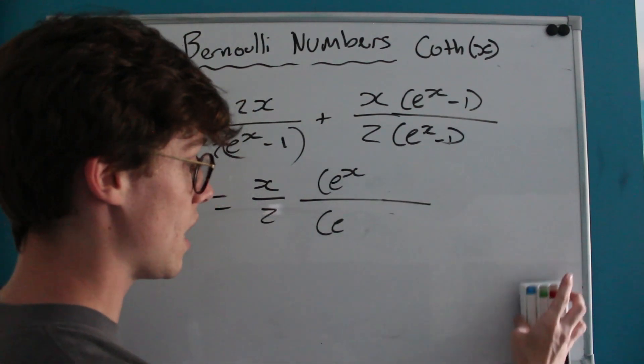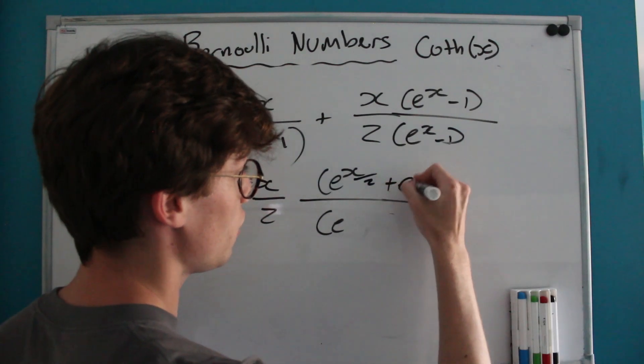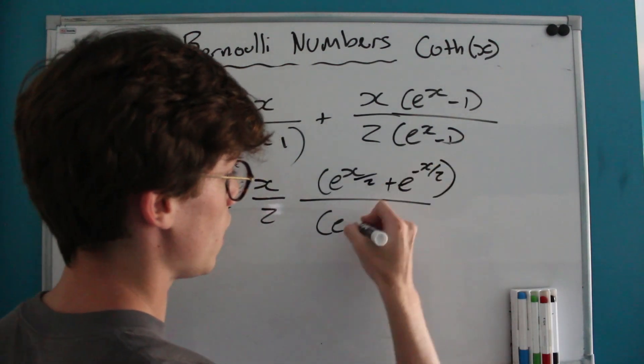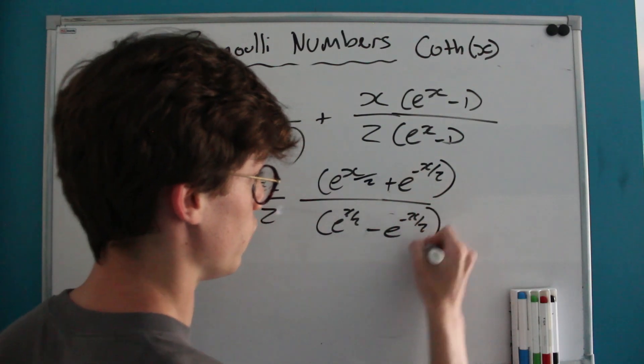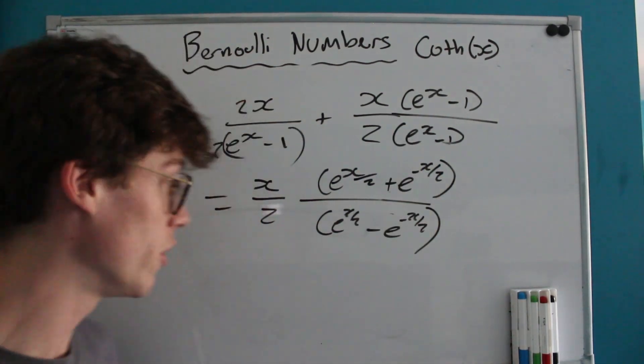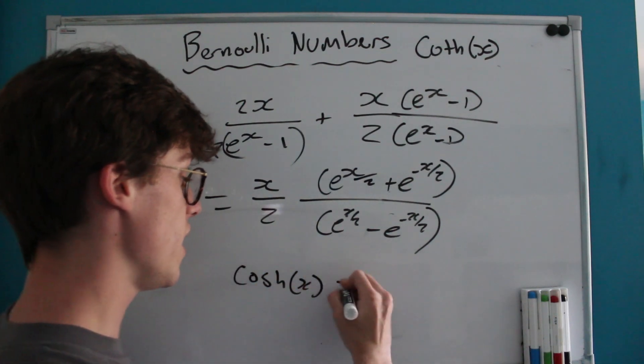This is going to leave us with e^(X/2) plus e^(-X/2) and e^(X/2) minus e^(-X/2). This should be screaming hyperbolic trig function.